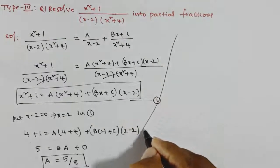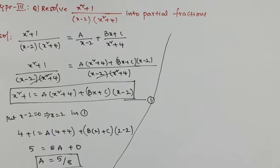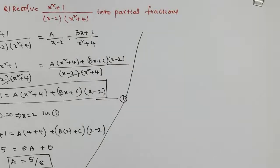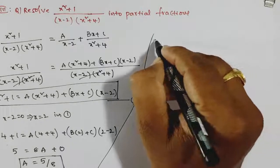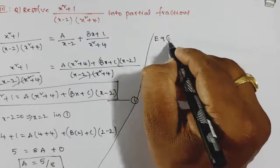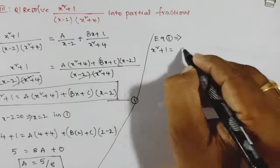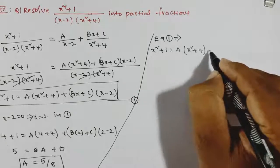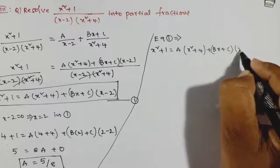Now, how do we find the remaining values B and C? First, write Equation 1: x² + 1 = A·(x² + 4) + (Bx + C)·(x − 2).